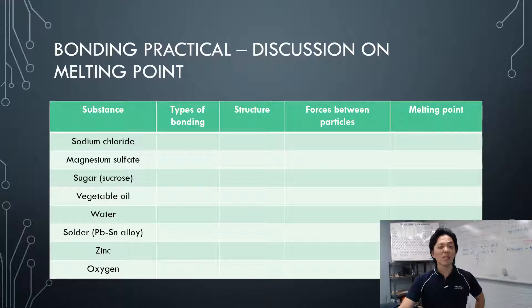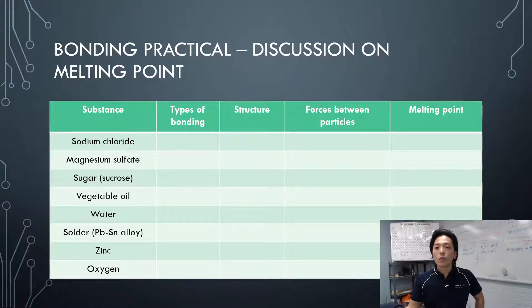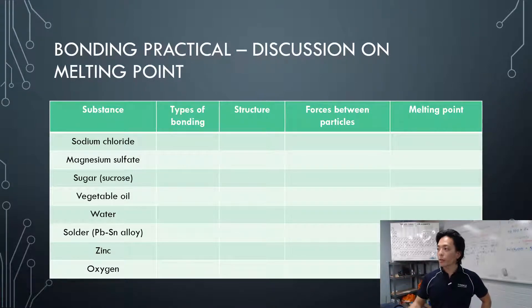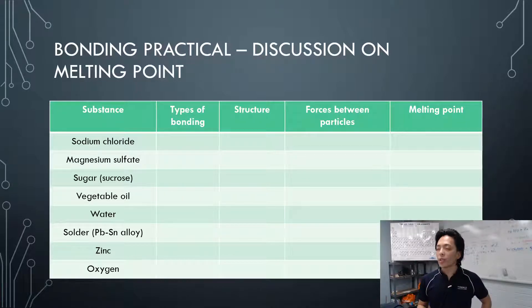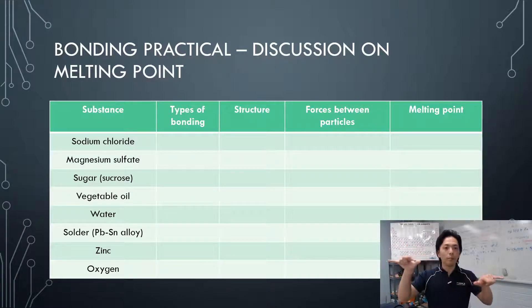The key takeaway is to know the properties of each type of bond. What's the property of typical ionic bonded compounds? Strong intramolecular force, high melting point — that's the summary we get from this table. High melting point means strong intramolecular force. For covalent ones, it really depends on how strongly the molecules attract each other, which we'll talk about when we look at their shapes.